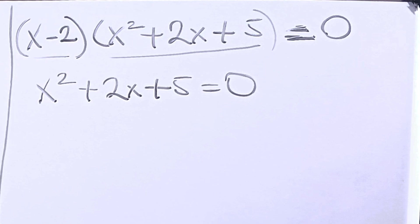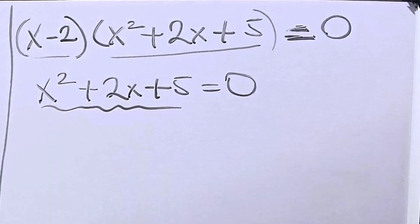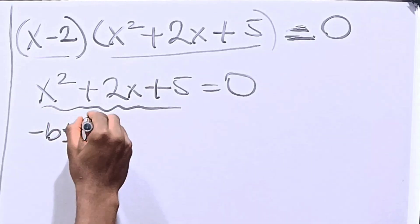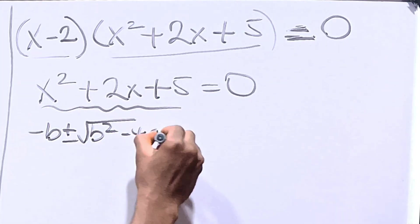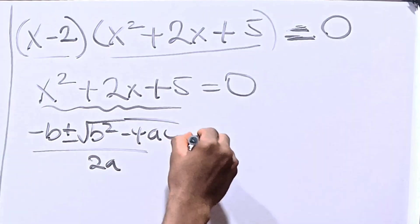However, when this is given and we cannot factorize it, we use the quadratic formula which states that minus b plus or minus square root of b squared minus 4ac all over 2a is equal to x.